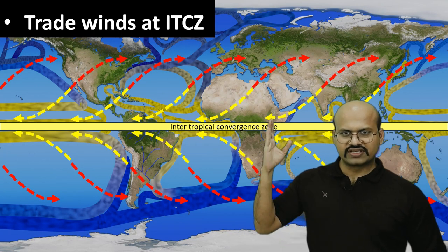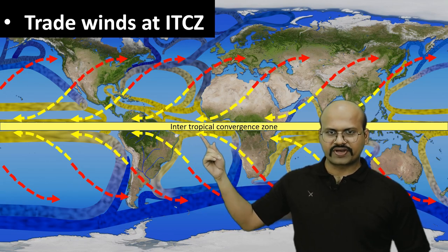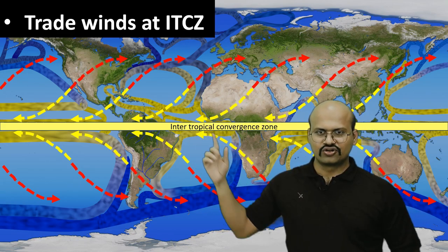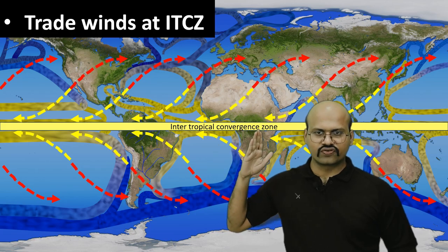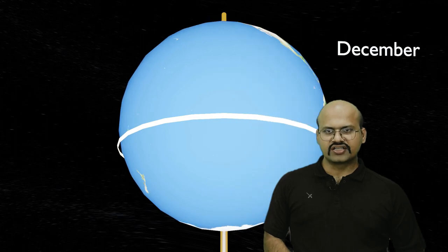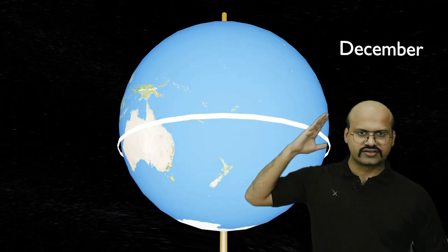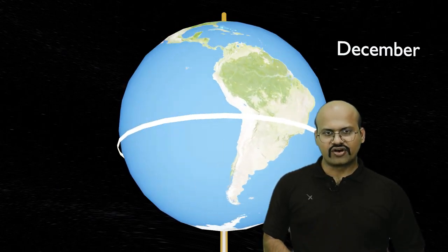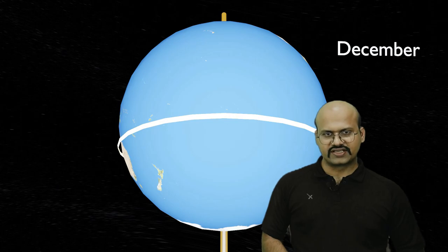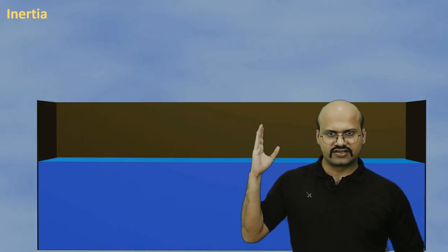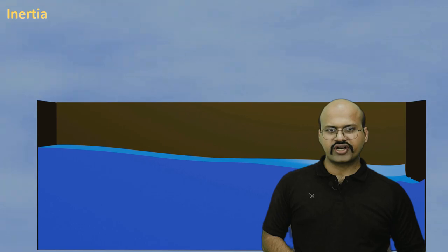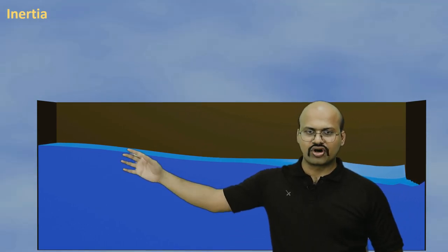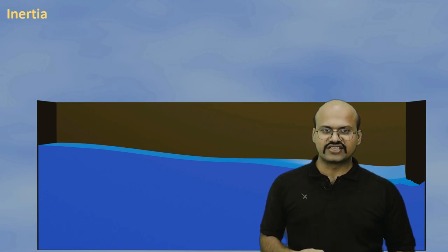Wind flows in this direction and when it comes close to the intertropical convergence zone it flows parallel to this region. The dragging force of these trade winds causes the equatorial current — it causes the water to flow in this direction. Moreover, our earth rotates from west to east, applying a dragging force on the water. But because of inertia, water particles try to stay in their position. If we consider a vessel with water, when we pull it in one direction the water accumulates in the opposite direction because inertia does not allow water particles to change location quickly.